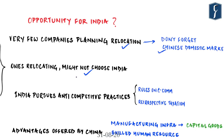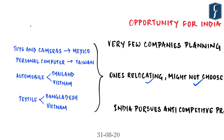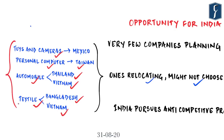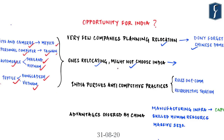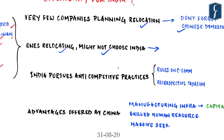Even if we assume certain companies want to relocate, it would be a laughable conjecture to assume they will relocate to India. The data shows: toys and cameras have already shifted to Mexico, a sizable chunk of PC manufacturing has shifted to Taiwan, automobiles have gone to Thailand and Vietnam, and textiles have shifted to Bangladesh and Vietnam. Keeping in view the trend of the last two to three years, not much has come to India.